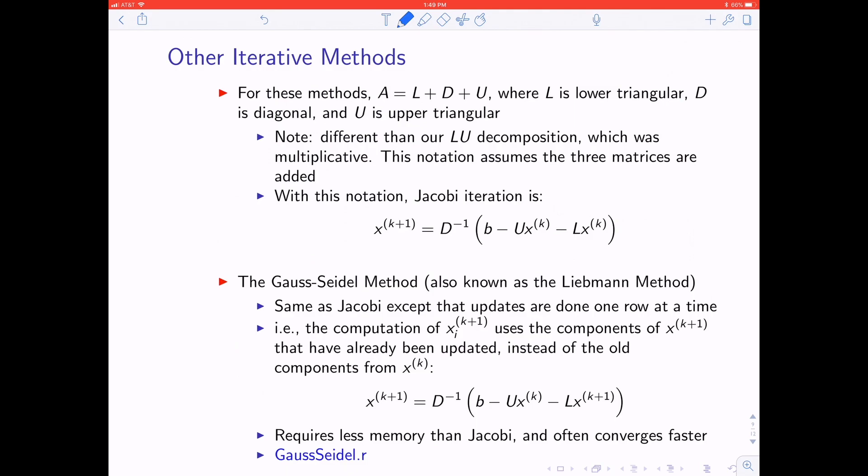There are other iterative methods we can discuss, and we're going to introduce one called Gauss-Seidel. In order to do that, we're going to take our matrix A and decompose it one level further. D is still going to have the diagonal elements, but L is going to have the upper triangular stuff, U is going to have the lower triangular stuff. Note, this is very different from LU decomposition. That's a multiplicative decomposition. Here we're adding these matrices together, so it's very different. Using that notation, then Jacobi iteration is X equals D inverse operating on B minus UXK minus LXK, where we've broken up our R matrix previously into this U and L component.